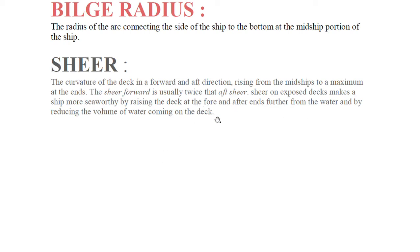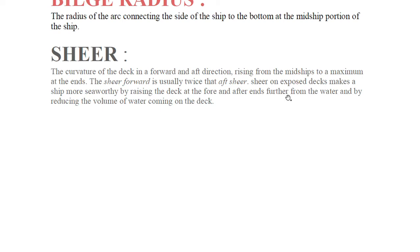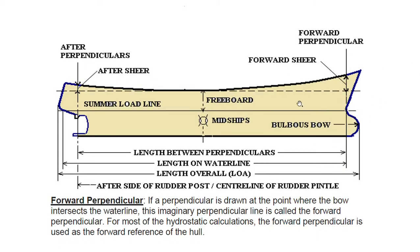Shear forward is double that of aft shear. Shear on exposed decks reduces the volume of water coming onto the deck at the fore and aft portions, which are susceptible during bad weather due to continuous pitching. To avoid water coming on deck in both fore and aft cases, shear is provided in both directions.